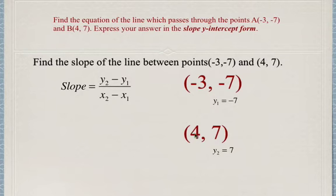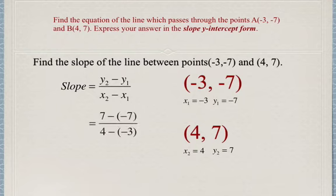And so if this 7 is our y2, then automatically 4 has to be our x2 value because the x2 and y2 have to be in the same ordered pair. That means that negative 3 is our x1. So we substitute into the equation...